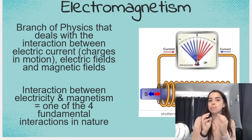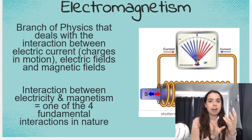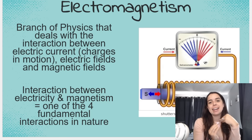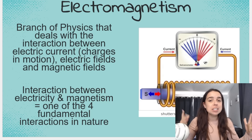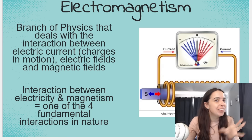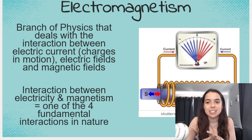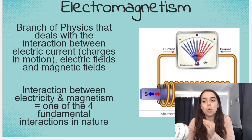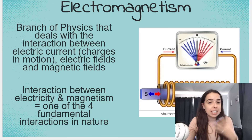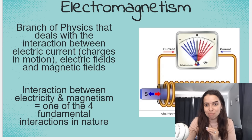So it's the interaction between electric currents, electric fields, and magnetic fields. This is one of the four fundamental interactions in nature — very important. It has enabled so many things in our society that we would not be able to survive without.